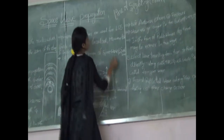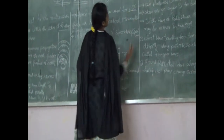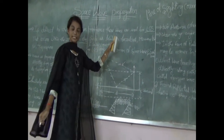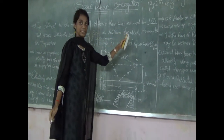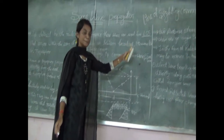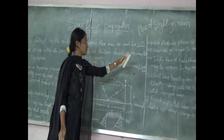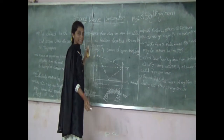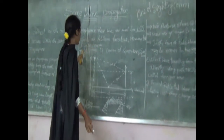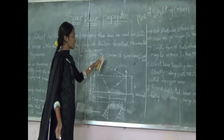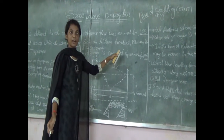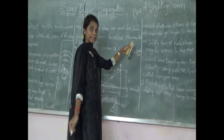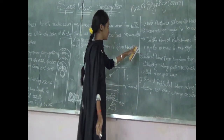Line of sight means line of sight communication, such as television broadcasting, microwave, and satellite communication. Line of sight propagation is common for both space wave propagation and surface wave propagation.